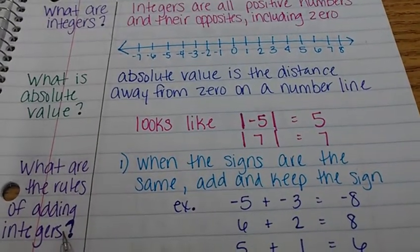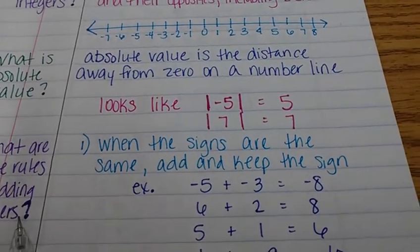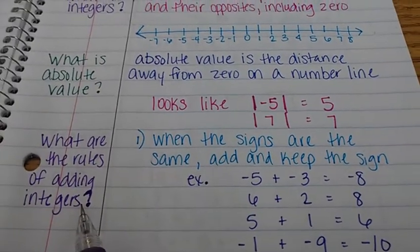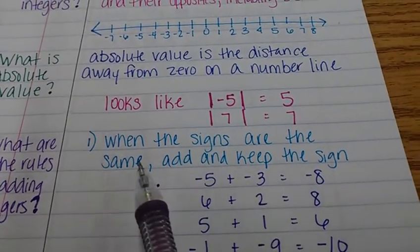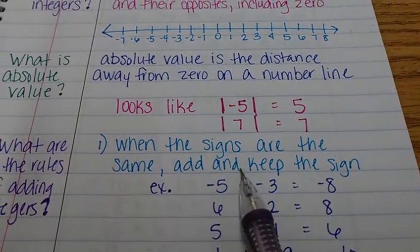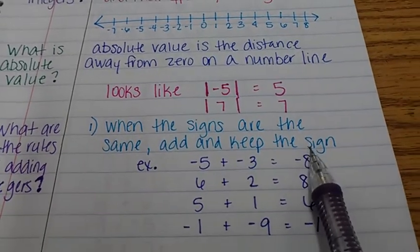Now to get into the rules. What are the rules of adding integers? There are two rules to adding integers. When the signs are the same, add and keep the sign. Seems really simple.